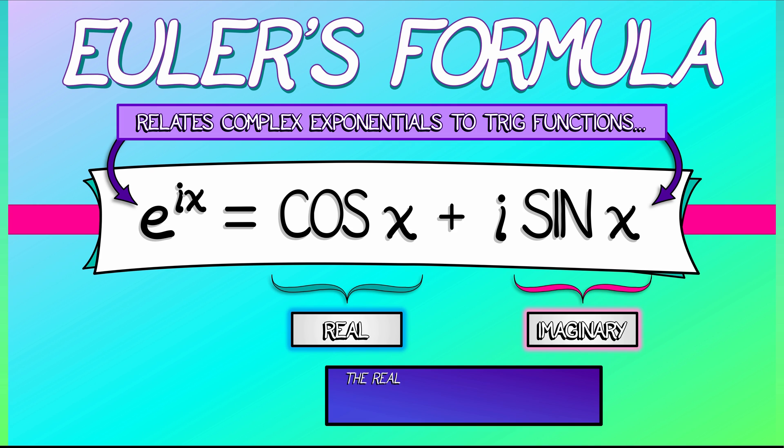Putting those two together gives you the components of the complex exponential, e^(ix).